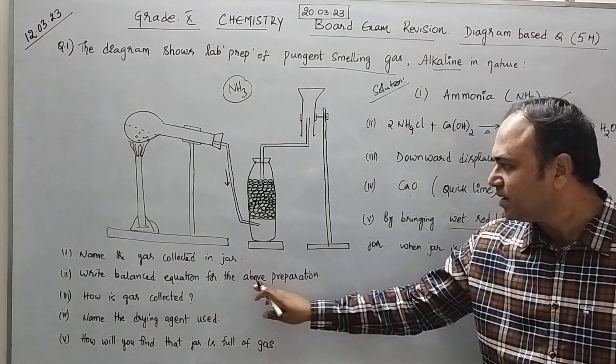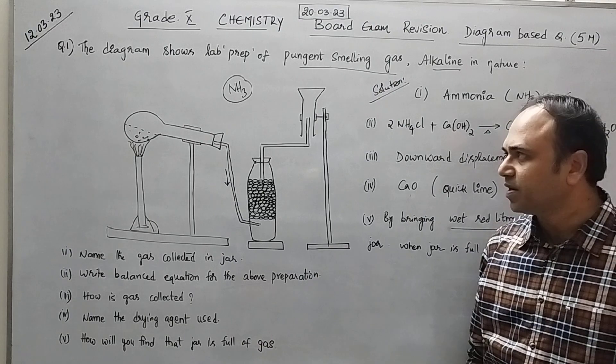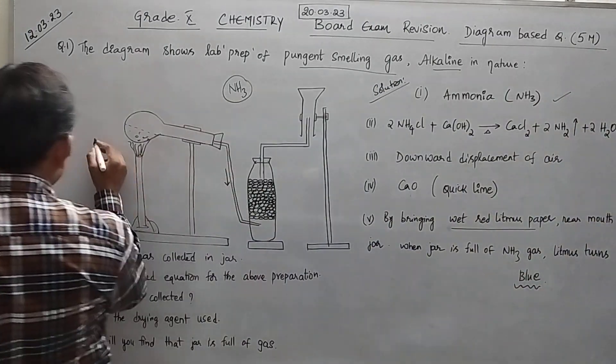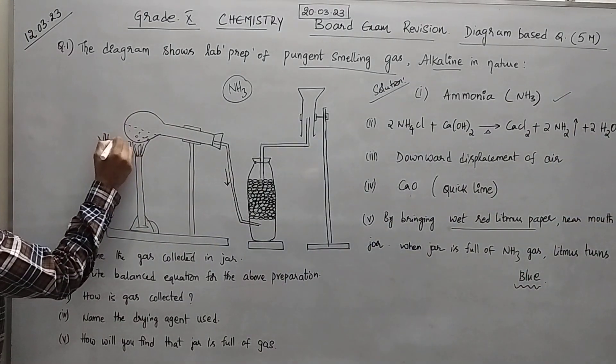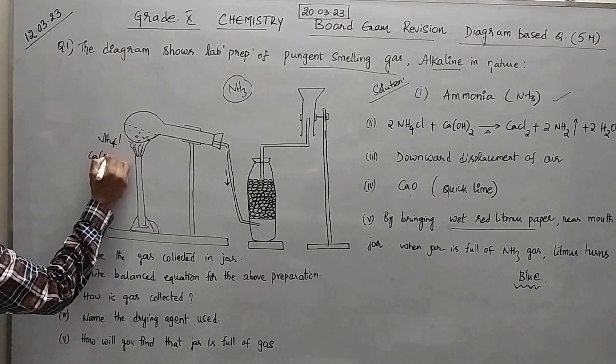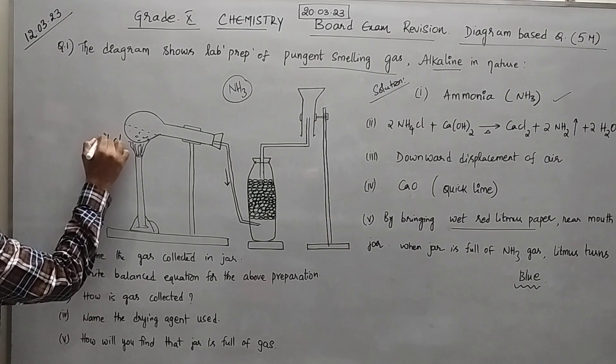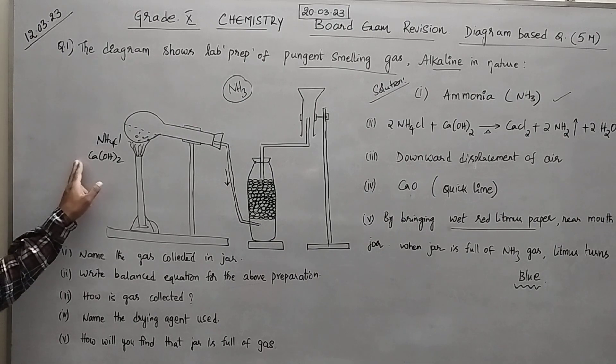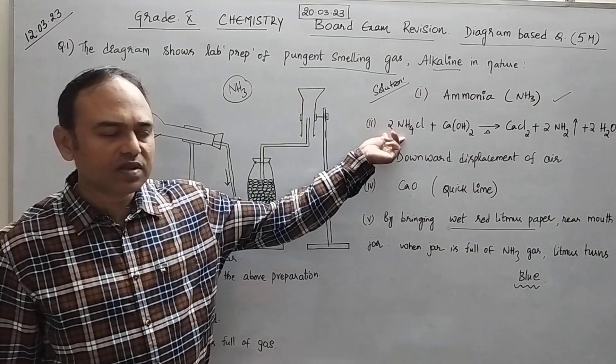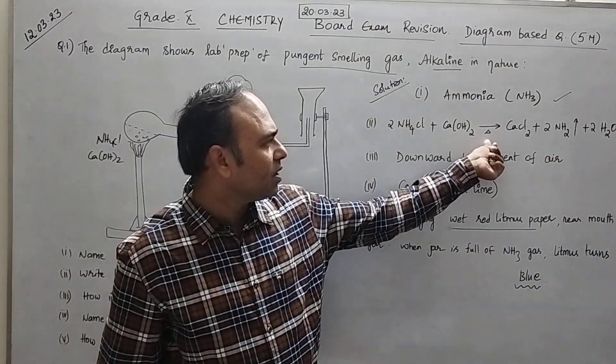Second question. Write balanced equation for the above preparation. We know that here you have NH4Cl as well as calcium hydroxide, the starting material. So therefore on heating 2NH4Cl plus Ca(OH)2 on heating gives...